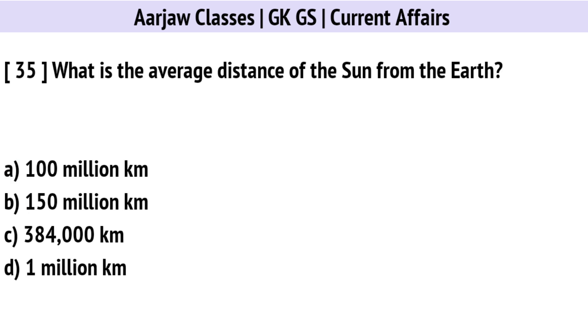What is the average distance of the Sun from the Earth? Correct option is B: 150 million km.